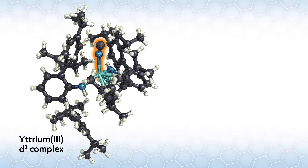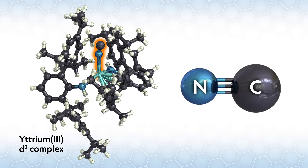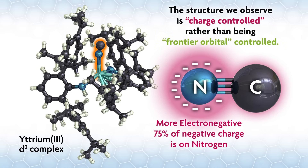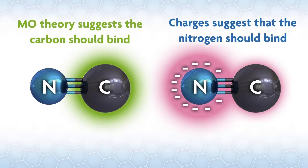Bonding in electropositive metals like lanthanides, magnesium, and yttrium is likely to be quite ionic. If you think about the charges in cyanide, the more electronegative nitrogen should have the more negative charge. Natural population analysis suggests that about 75% of the negative charge is on the nitrogen. In other words, the structure we observe is charge-controlled rather than being frontier-orbital controlled. While MO theory suggests the carbon should be preferred, the charges suggest that the nitrogen should bind.